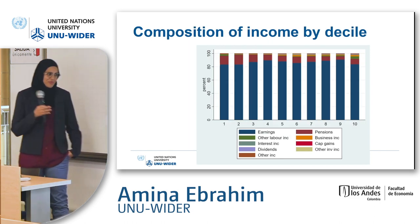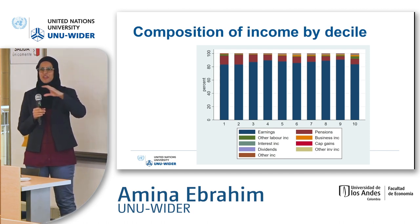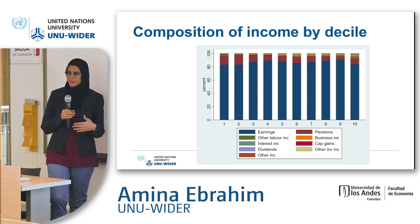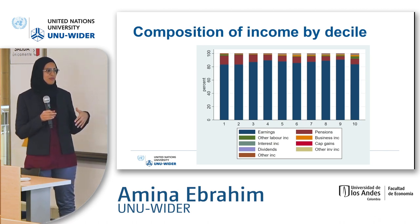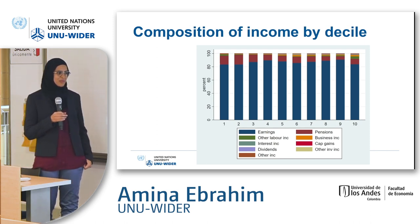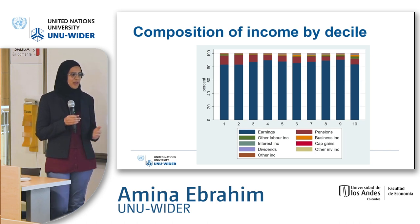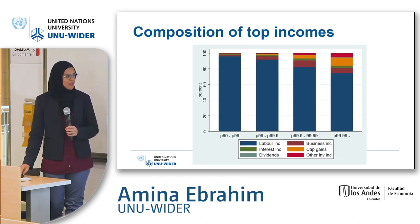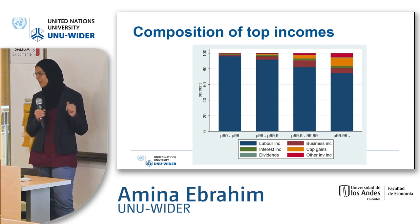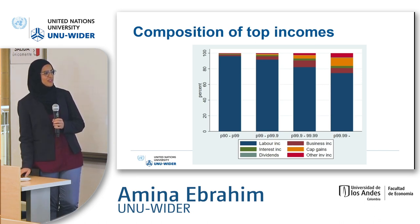Another interesting feature of the South African tax data is that it includes source codes for each type of income, and this is quite well-reported. One gap is dividend income, which we still need to work on. In terms of earnings, interest, business income, and capital gains, we see — as expected — that business income and capital gains become more important in higher deciles. Looking at just the top 10 percent, business income becomes much more prominent, and capital gains are particularly important for the top 0.1 percent.